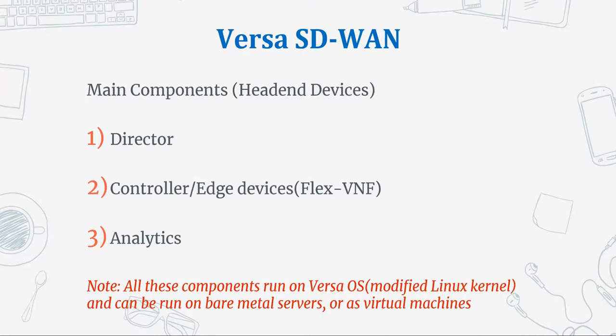In Versa SD-WAN, we have three main components which are called the head-end devices. The first one is the Versa Director. The second one is the Controller and edge devices — they will all be running on the FlexVNF. The third one is Versa Analytics, which we'll be using for log collection and capturing different information from the SD-WAN devices and generating different reports. All these head-end devices are running on the Versa OS, which is a modified Linux kernel. We can run these on a bare metal server or as a virtual machine.